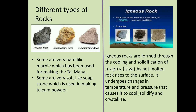What is igneous rock? Igneous rocks are formed through the cooling and solidification of magma or lava. As hot molten rock rises to the surface, it undergoes changes in temperature and pressure that causes it to cool, solidify and crystallize. Examples of igneous rock include basalt, granite, etc.